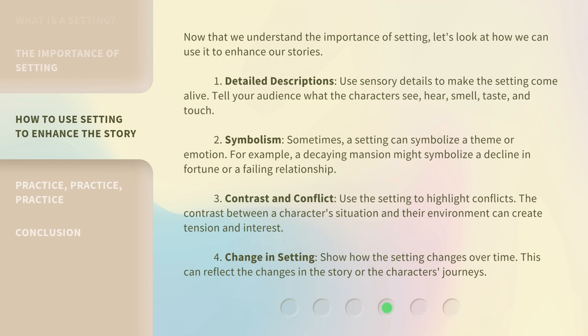Now that we understand the importance of setting, let's look at how we can use it to enhance our stories. First, use detailed descriptions — sensory details to make the setting come alive. Tell your audience what the characters see, hear, smell, taste, and touch. Second, consider symbolism. A setting can symbolize a theme or emotion; for example, a decaying mansion might symbolize a decline in fortune or a failing relationship.